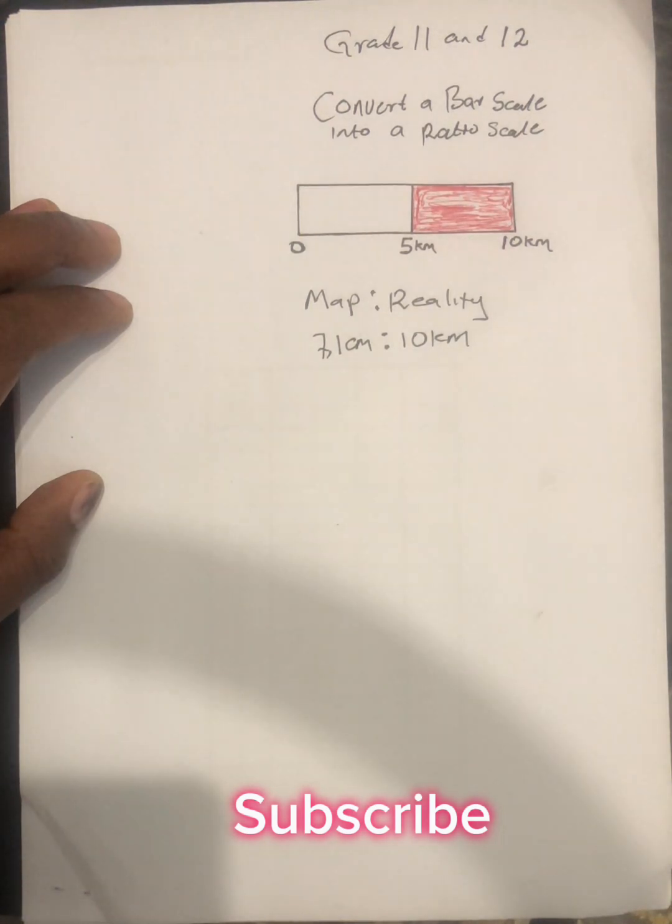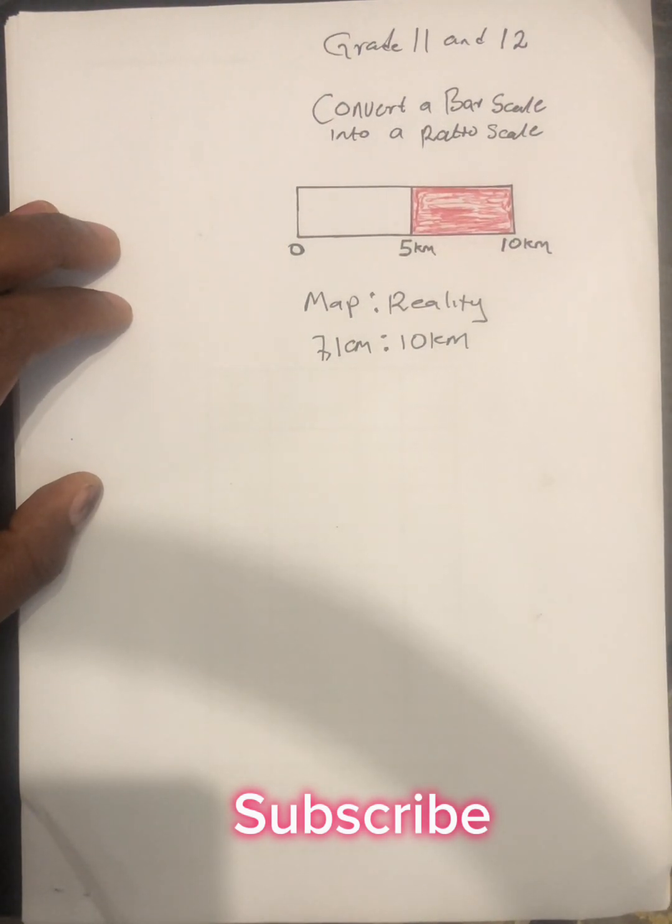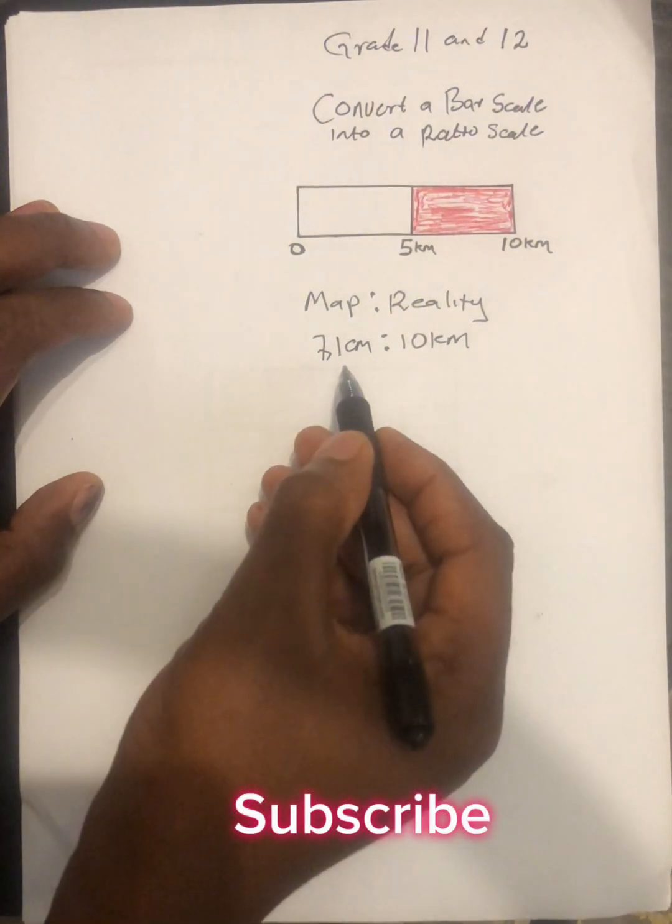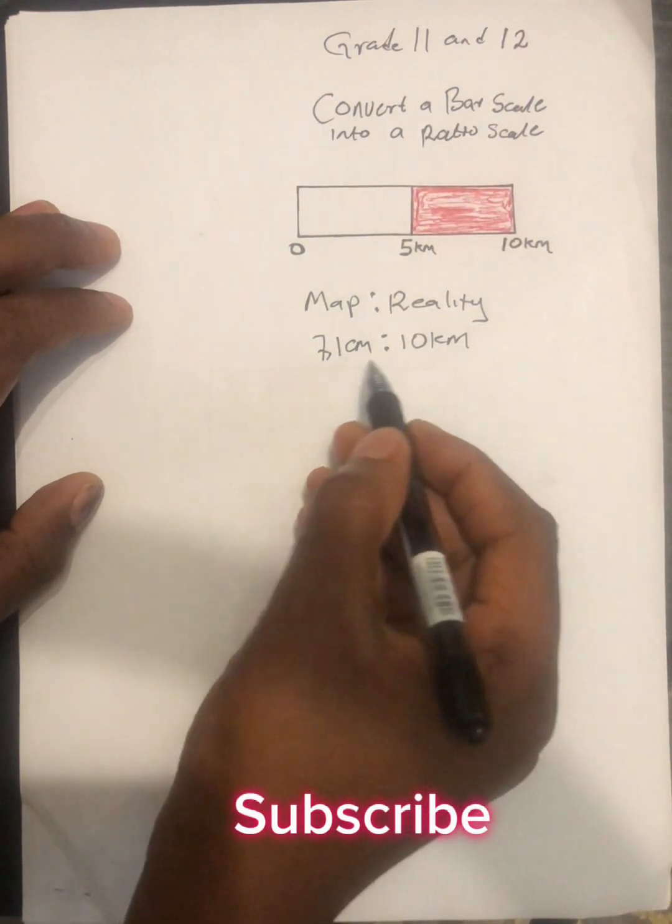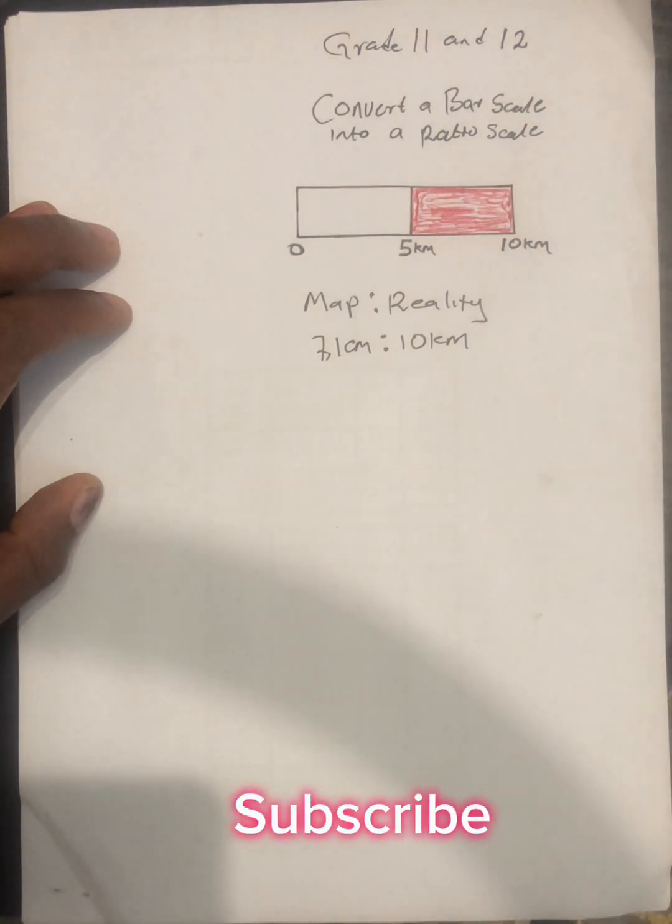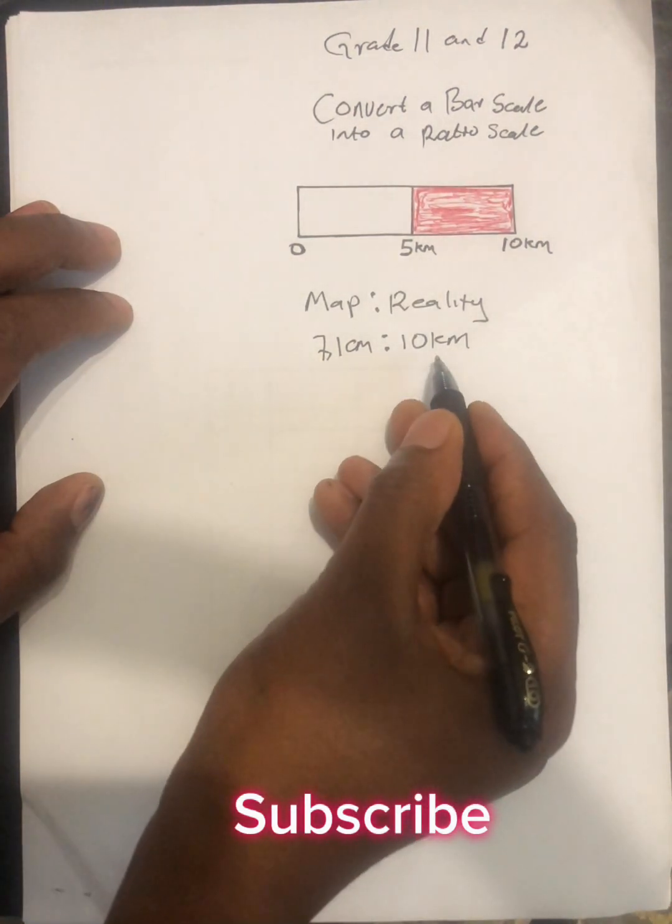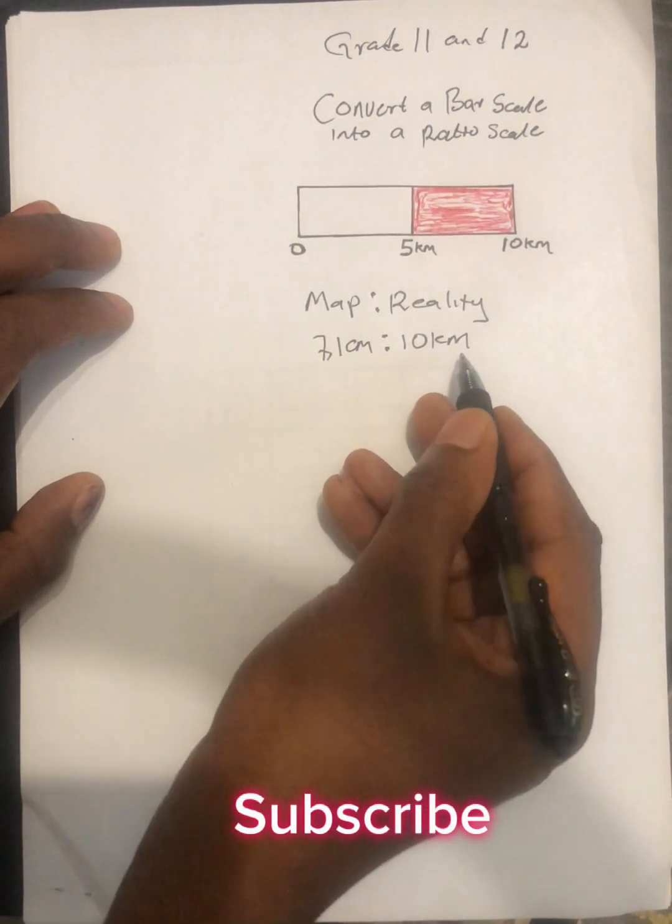Don't forget, we are converting this into what? Into a ratio scale or a number scale. So now the thing that you need to do, if you check here, we are having different units. You must convert this to the same units. We are going to change the kilometers to centimeters.